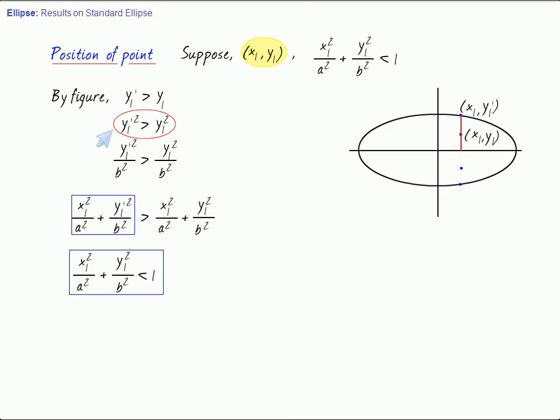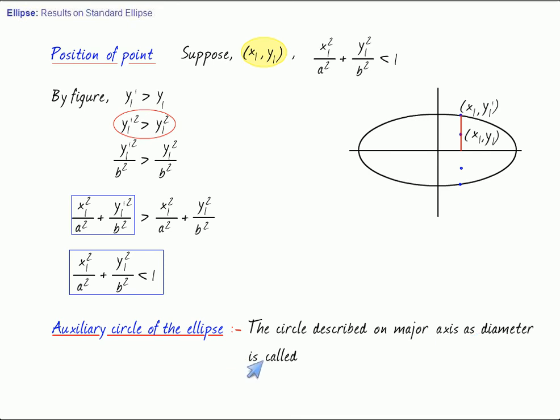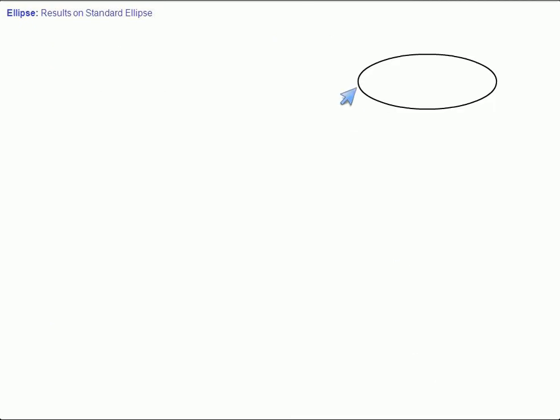Now, we will come to a very important thing attached to an ellipse, which is the auxiliary circle of an ellipse. The circle described on major axis as diameter is called auxiliary circle of the ellipse. Let us see what auxiliary circle is. This is our usual ellipse, and this is the major axis. So this circle is called auxiliary circle of the ellipse, and it plays a very dominant role in studying an ellipse.